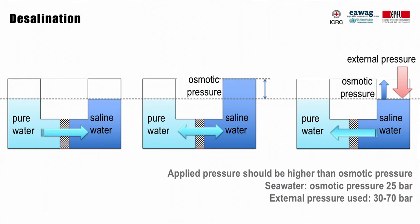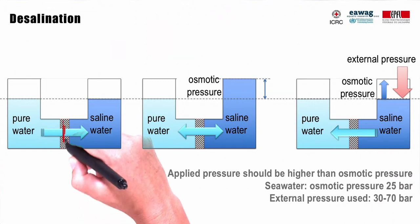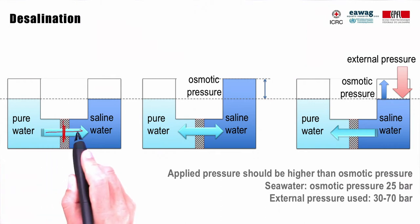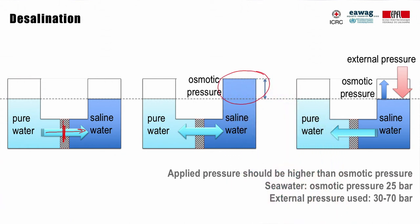Desalination is used to remove salt from sea or brackish water. If a semipermeable membrane is installed between pure and saline water containers, pure water will be drawn toward the saline water, creating an osmotic pressure. In order to overcome this osmotic pressure, external pressure higher than osmotic pressure needs to be applied. Seawater has an osmotic pressure of about 25 bar, which is why reverse osmosis systems are operated at 30 to 70 bar to achieve movement of pure water through the membrane. High-pressure pumps and good power supply are required, as well as pretreatment to protect membranes from fouling.